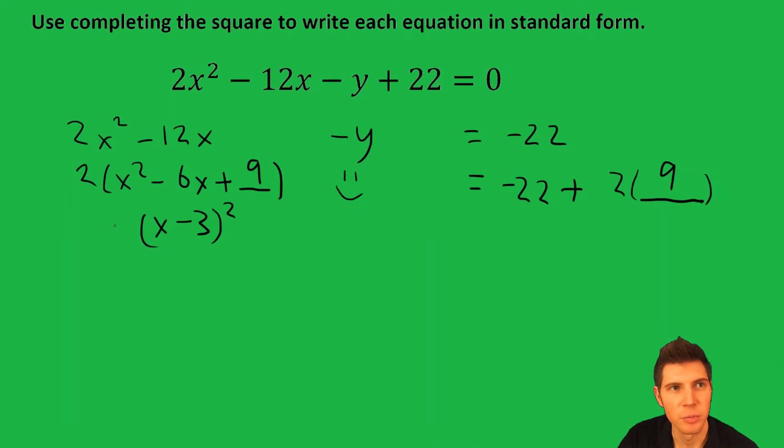Your 2 is brought down, we can bring down the -y, and then we can just do -22 + 18. -22 + 18 is -4. This side is 2(x - 3)² - y.